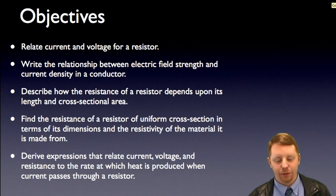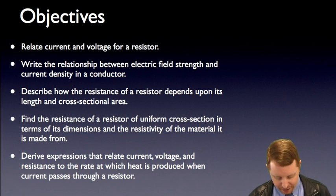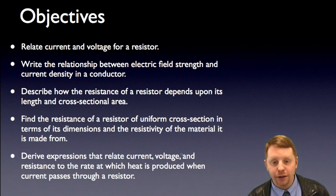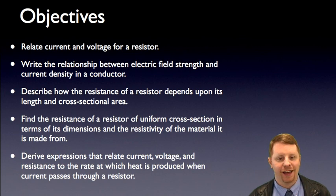Describe how the resistance of a resistor depends upon its length, cross-sectional area, and we'll throw in resistivity, a material property. And finally, derive expressions that relate current, voltage, and resistance to the rate at which heat is produced when current passes through a resistor.